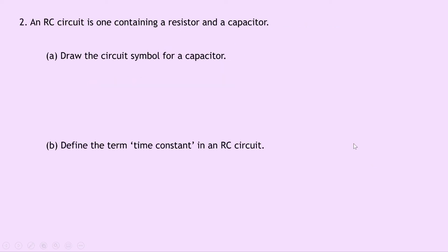Question 2 says an RC circuit is one containing a resistor and a capacitor. Part A asks to draw the circuit symbol for a capacitor — it looks like two parallel plates connected to wires.